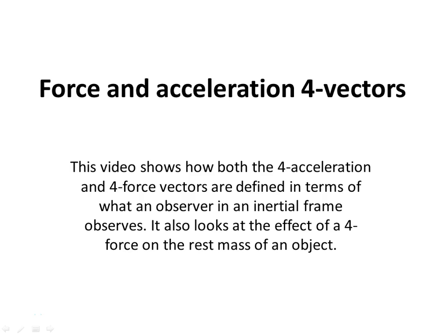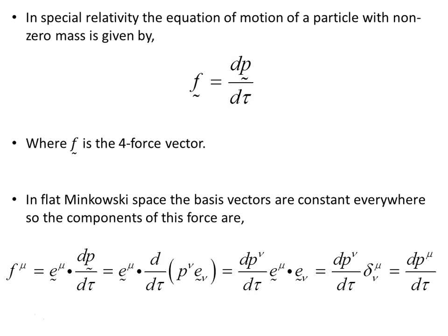This video looks at both the 4-acceleration and 4-force vectors as defined in terms of what an observer in some inertial frame observes. It also looks at the effect of a 4-force on the rest mass of an object. In special relativity, the equation of motion for a particle with non-zero mass is given by the derivative of the momentum 4-vector with respect to proper time tau.